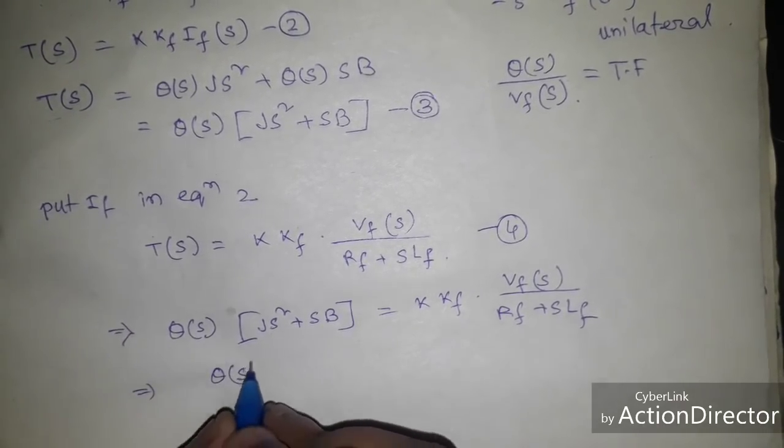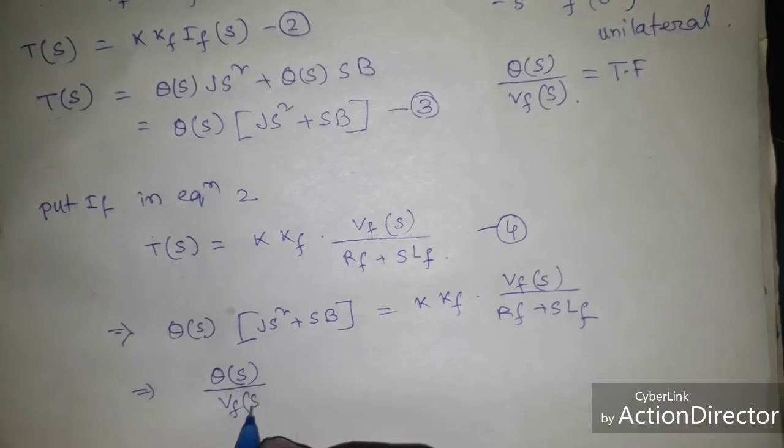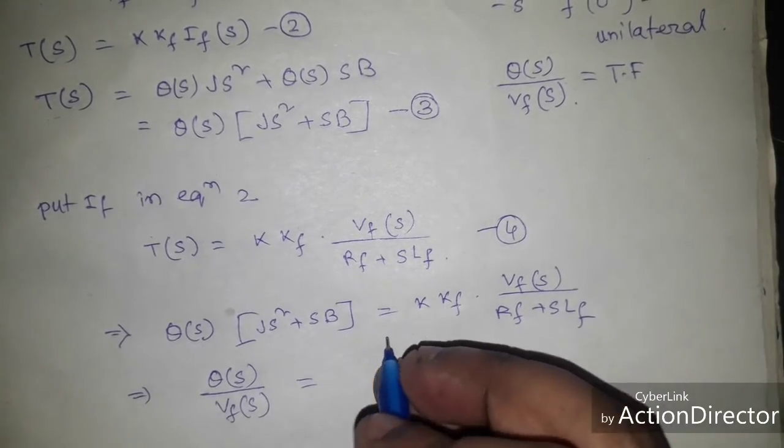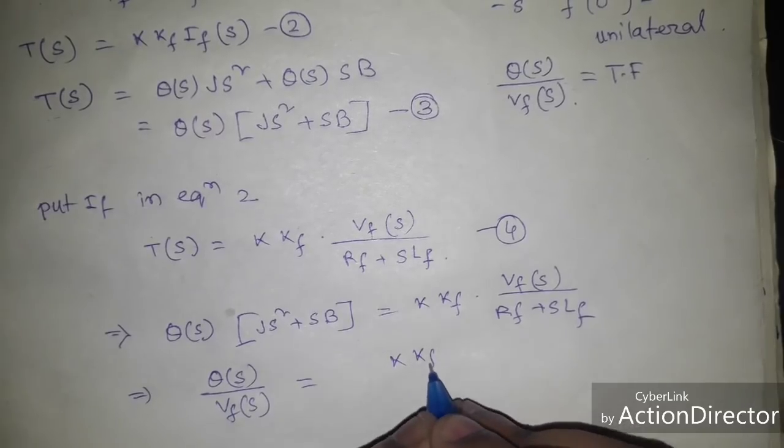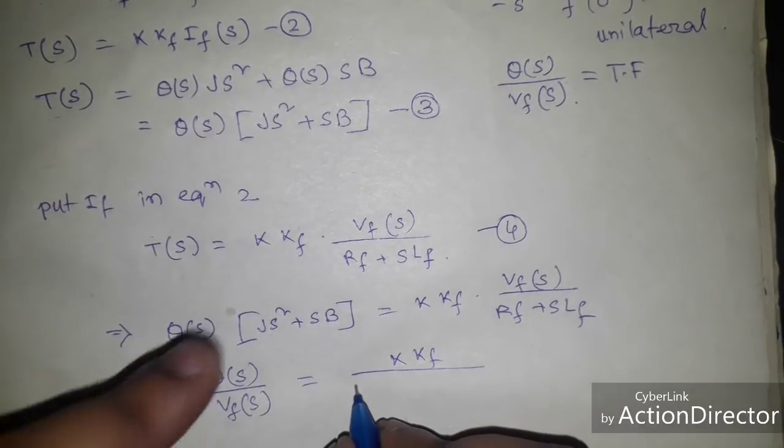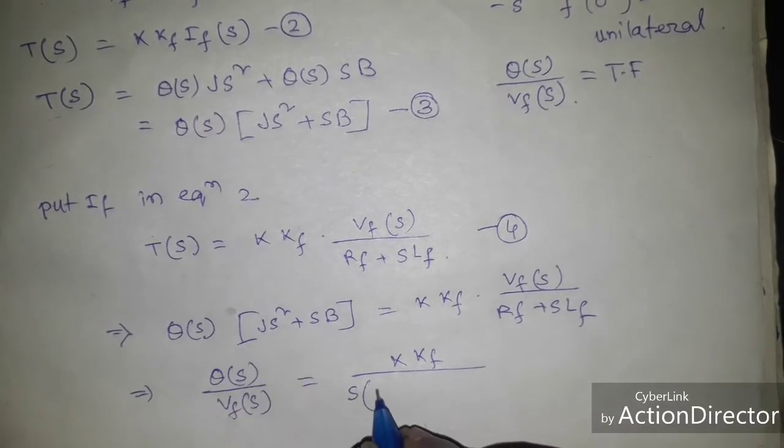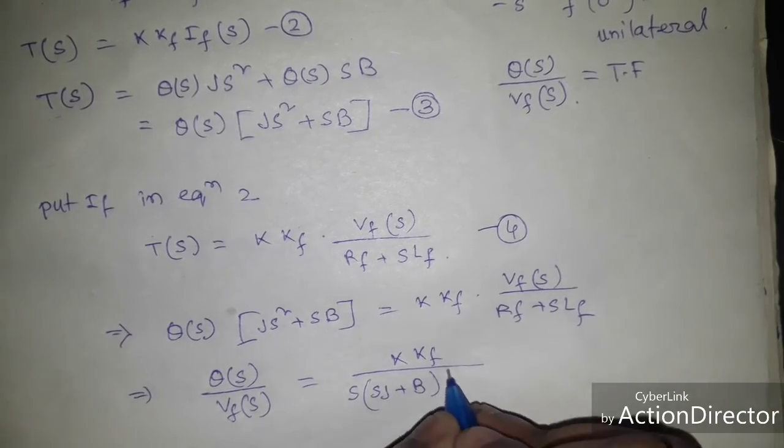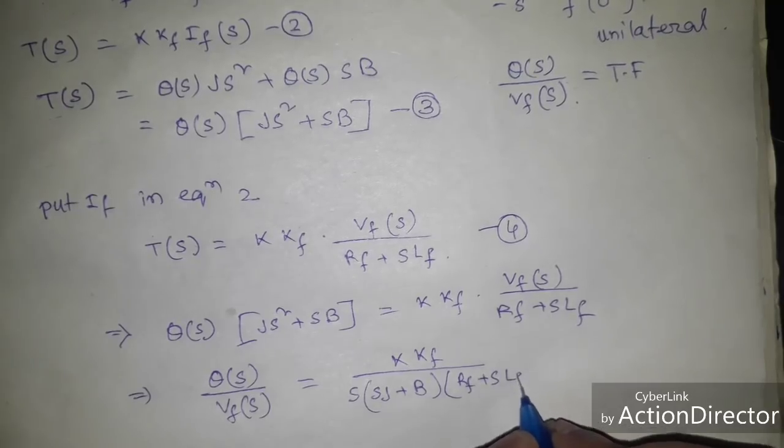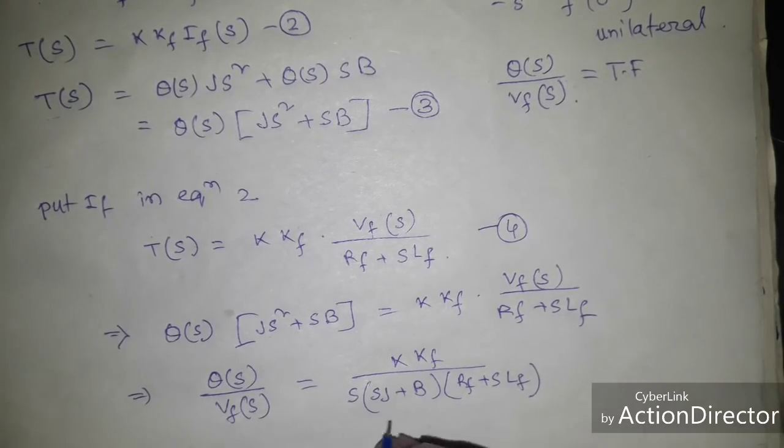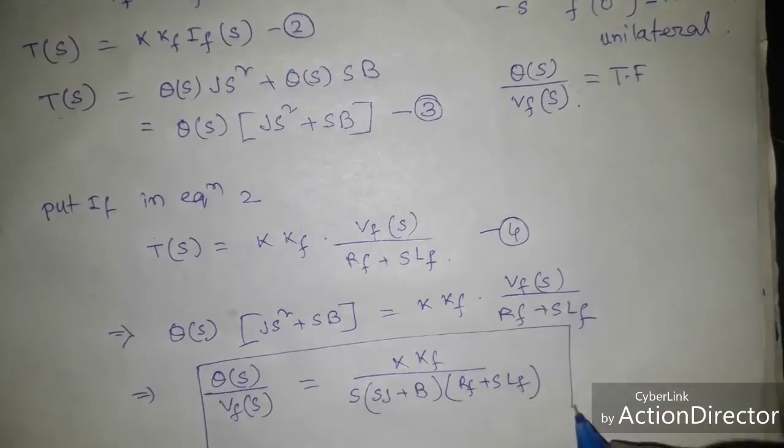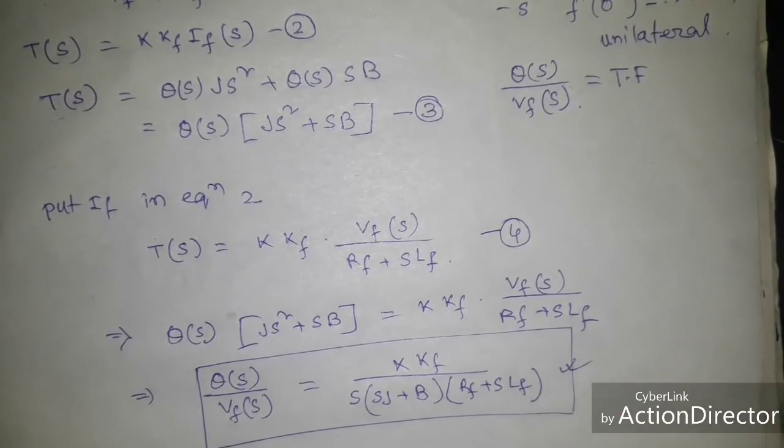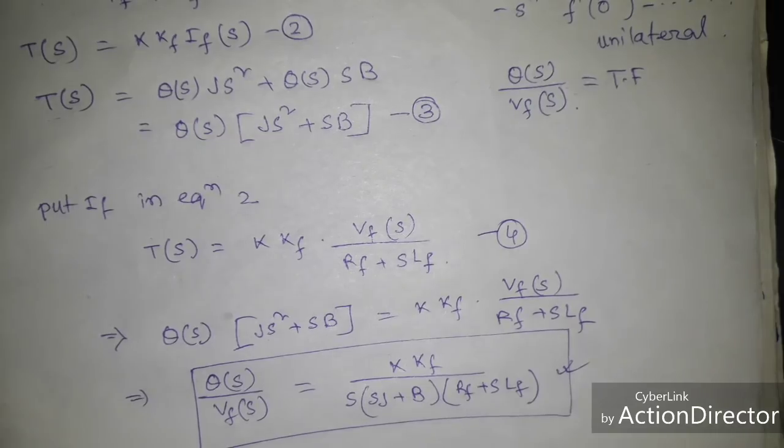Now we can write that θ(s) by Vf(s) equal to K Kf divided by, if we take common s, that will be s times J s plus B into Rf plus s Lf. So this is our final transfer function of field control DC motor.